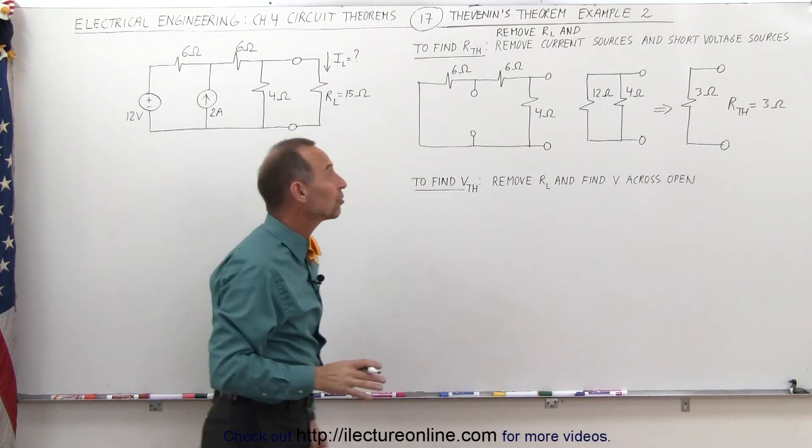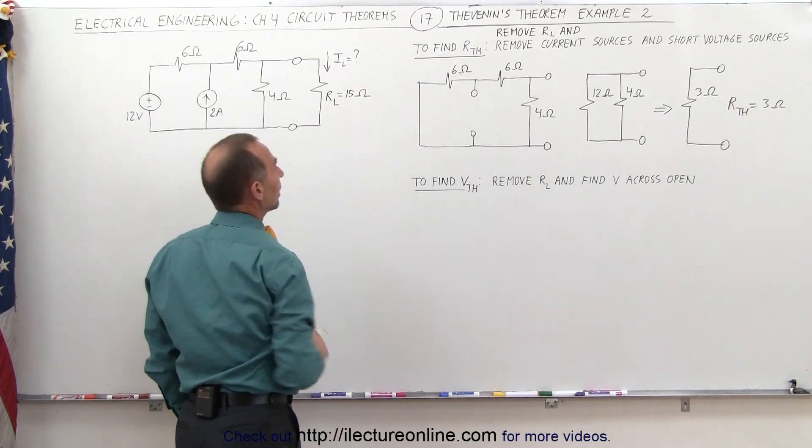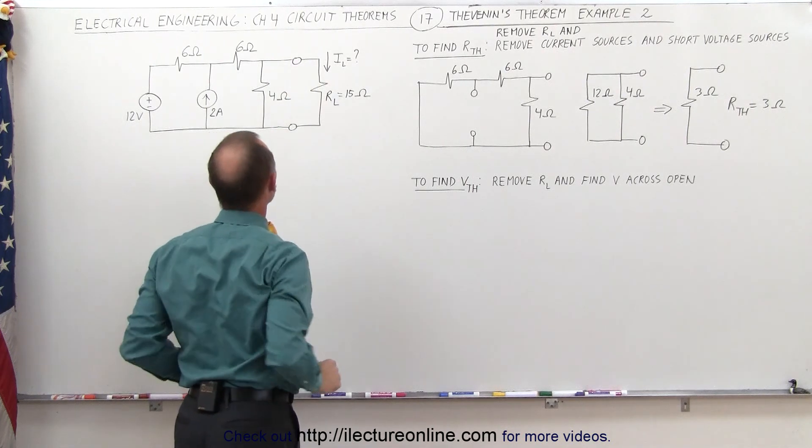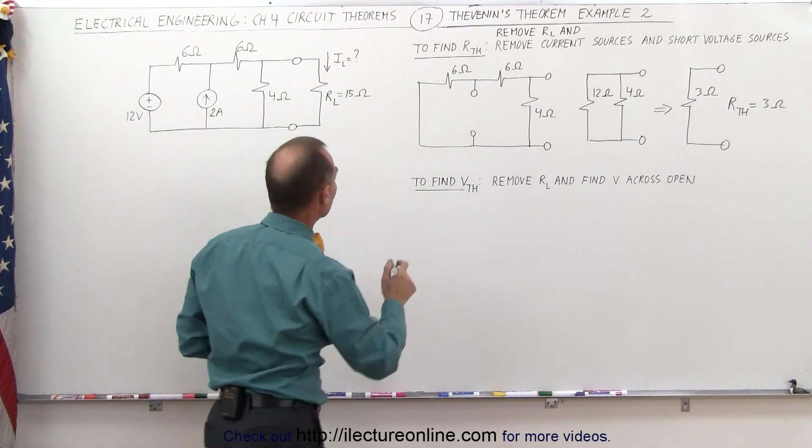Now that we have that, now we're trying to find the Thevenin's voltage. What we do is remove the R sub L, the load resistor, and then we find the voltage across the open end with everything else in place. Let's go ahead and do that here.